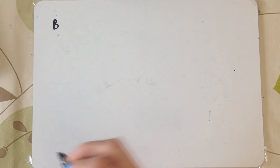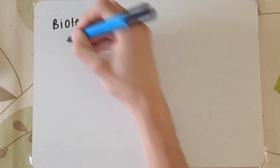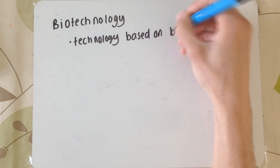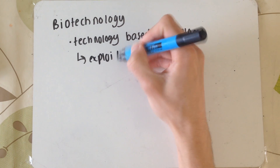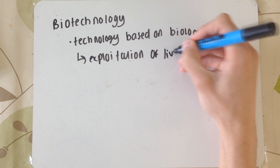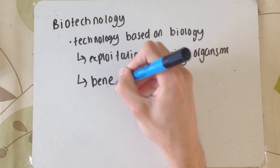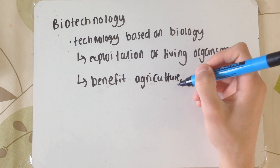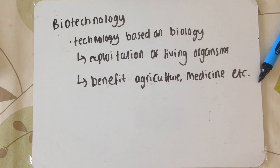In this video we're going to talk about biotechnology. More specifically we're going to look at the use of microorganisms in this video, and then in the next video we'll probably go on to industrial enzymes. So first things first, biotechnology is basically technology based on biology — it's in the name — and this usually involves the exploitation of living organisms for the benefit of things like food science, industry, and things like that.